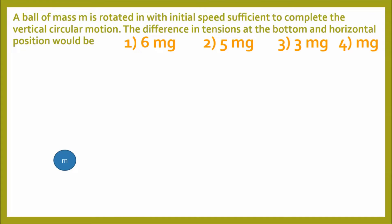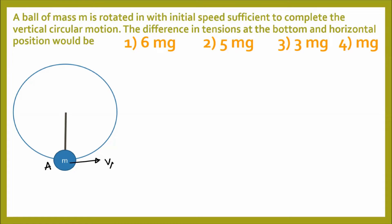In this question, a ball of mass m is rotated with initial speed sufficient to complete vertical circular motion. The difference in tensions at the bottom and horizontal positions is required. Options are 6mg, 5mg, 3mg, and mg. We take the bottom-most position as A with velocity v_A, sufficient for complete circular motion. T_A = mg + mv_A²/r, where r is the string length.